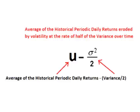We take the historical closing prices over a period of time, such as one year or the entire life of the asset. We find a periodic daily return for each day and find the average of those returns. However, we erode that average return rate based on volatility. The standard rate for return erosion is one half of the variance over time. Therefore, the drift is the average of the past periodic daily returns minus one half of the variance over time.